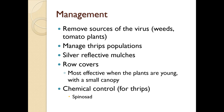To manage tomato spotted wilt virus: remove sources of the virus, manage thrips populations, use silver reflective mulches which can repel thrips, use row covers which are most effective when plants are young with a small canopy, and use chemical control for thrips - spinosad is an organic product option.